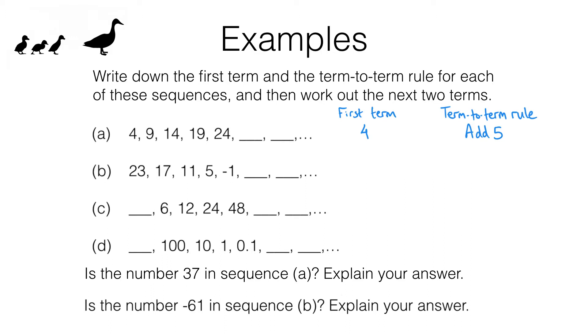What we also need to do is work out the next two terms in each sequence. So now that we know that the term-to-term rule is to add 5, we simply add 5 to 24 to get this term here which is 29, and then we add 5 to 29 to get the next term and that gives us 34.